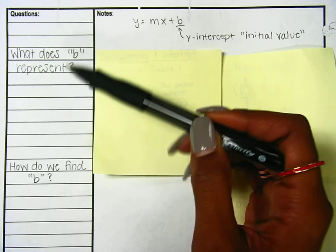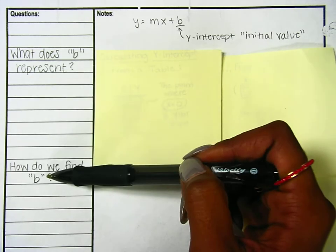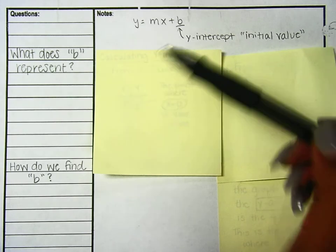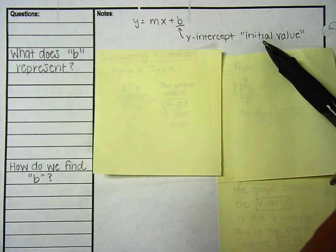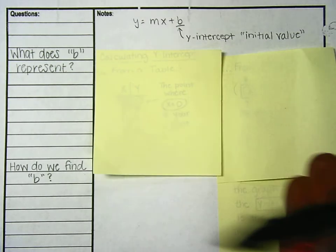So our questions on the other page were what does M represent and how do we find M. Now we're going to talk about B, which is our y-intercept or initial value. Let's talk about how we find B.